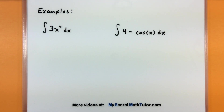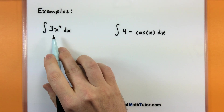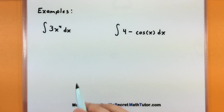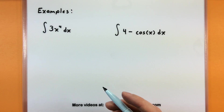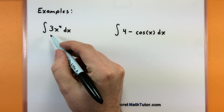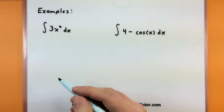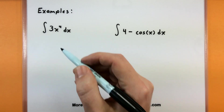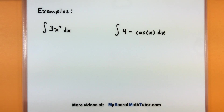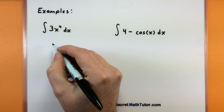Let's jump into some examples. For the first one, I'm looking at the indefinite integral of 3x to the fourth power — I could also say I'm looking for the anti-derivative of 3x to the fourth. The biggest thing to think about is: if I started with a function and took its derivative it would turn into this, and to get good at that process you have to really know your derivatives.